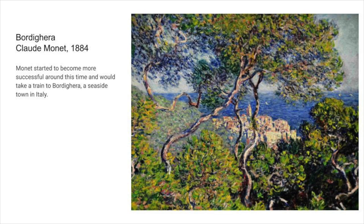The final painting is called Bordiguerra by Claude Monet, and this was done in 1884. At this time Monet started to become more successful, and he would take a train to Bordiguerra, which is a seaside town in Italy, and he painted this while he was visiting that town. I want you to think about what colors do you see and what do you see in this painting. What makes it different from the other paintings? Somebody in class today noticed that there were so many colors in the trees that you wouldn't really notice at first.